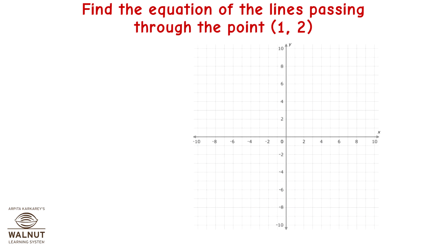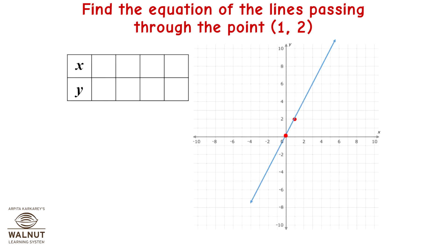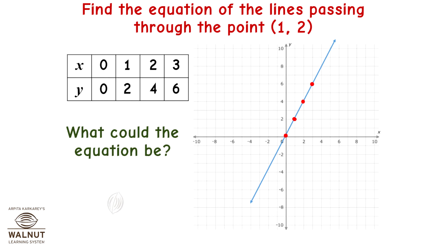Find the equation of the lines passing through the point (1, 2). Let us first mark the point. Infinite lines pass through a point. Let's have one that passes through the point and the origin. Some points on this line are (0, 0), (1, 2), (2, 4), (3, 6). The equation is y = 2x, or equivalently 2x - y = 0.